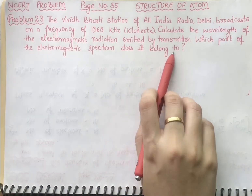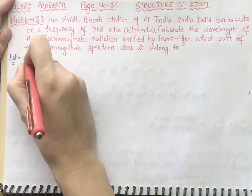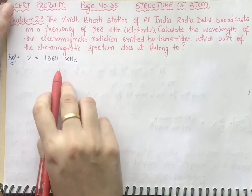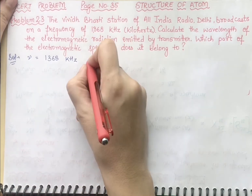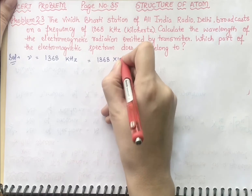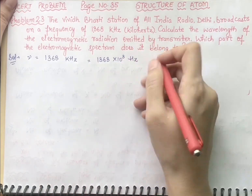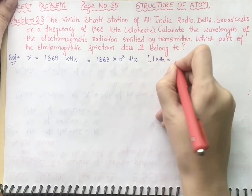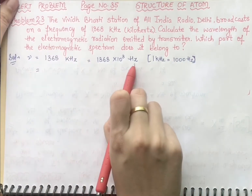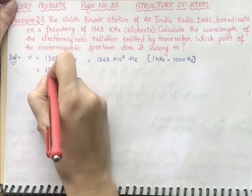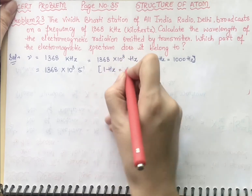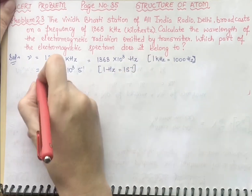First we write the given values. Frequency (ν) = 1368 kilohertz. We convert this to SI units: 1 kilo = 10³, so ν = 1368 × 10³ hertz. We can note that 1 kilohertz equals 1000 hertz, and 1 hertz equals 1 second inverse, so ν = 1368 × 10³ s⁻¹.